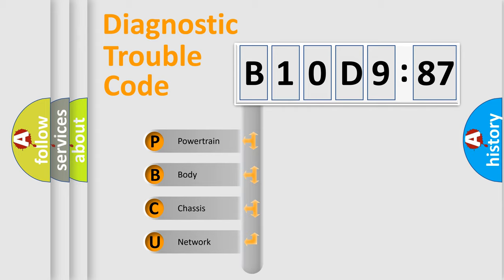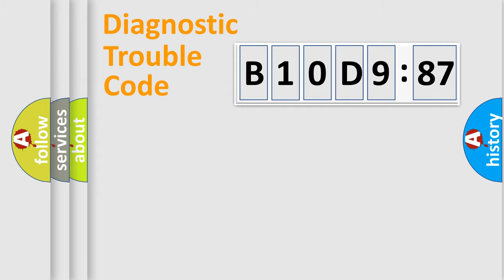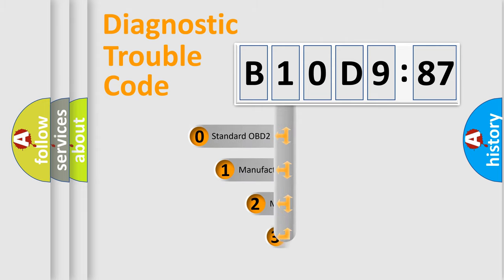We divide the electric system of automobile into four basic units: Powertrain, Body, Chassis, and Network. This distribution is defined in the first character code.